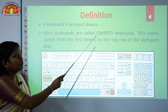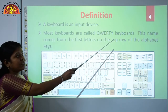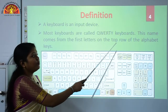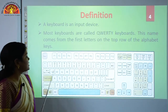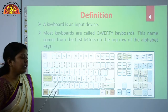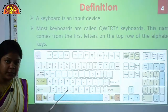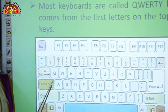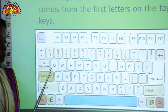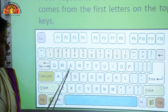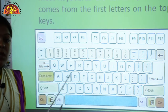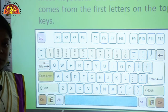Most keyboards are called QWERTY keyboards. This name comes from the first letters on the top row of the alphabet keys. These are the alphabet keys which are present on the middle of the keyboard, and you can see this is the top row of the alphabet keys which has keys Q, W, E, R, T, Y. That's why it is called the QWERTY keyboard.